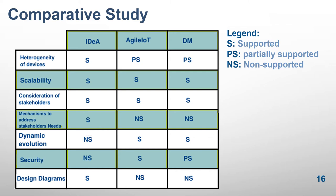This table summarizes the comparative study we carried out about the three methodologies. First, IDEA methodology considers heterogeneity through the SysML for IoT profile, which allows the different types of devices to be represented graphically. It also makes possible to carry out large-scale applications, addresses the concerns of stakeholders, and provides mechanisms through views and viewpoints. IDEA also offers via SysML some diagrams to assist designers at certain development phases to best design IoT systems. However, IDEA doesn't provide methods to deal with the dynamic evolution of IoT systems or for the security aspect of them.